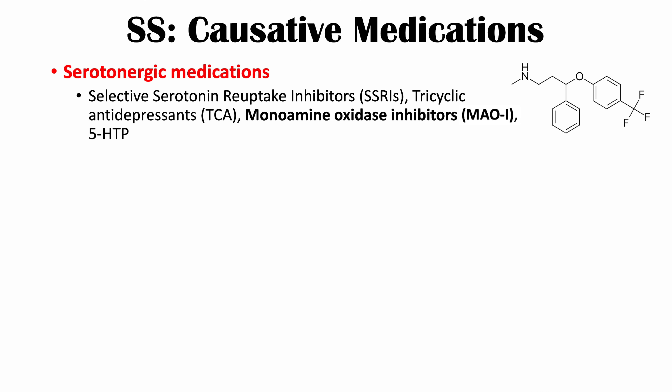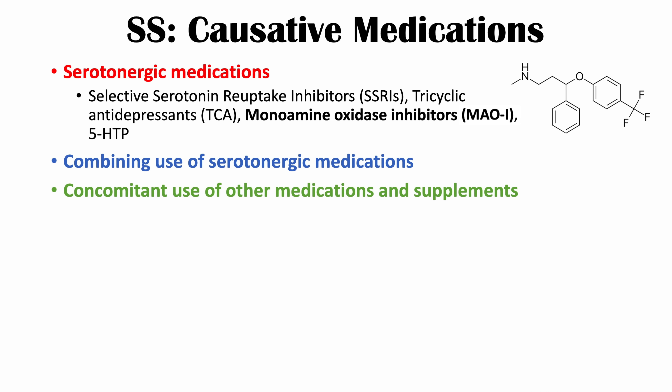A lot of times patients are on a stable dose of these serotonergic antidepressants. If they take too much, or if they combine these medications — such as taking an SSRI along with a TCA — or add another medication or supplement, that puts them at an increased risk for serotonin syndrome.